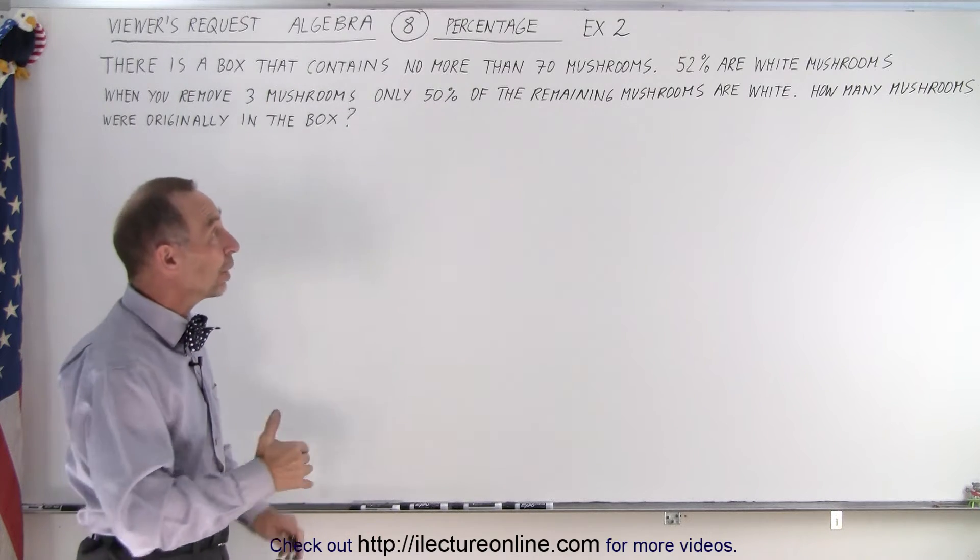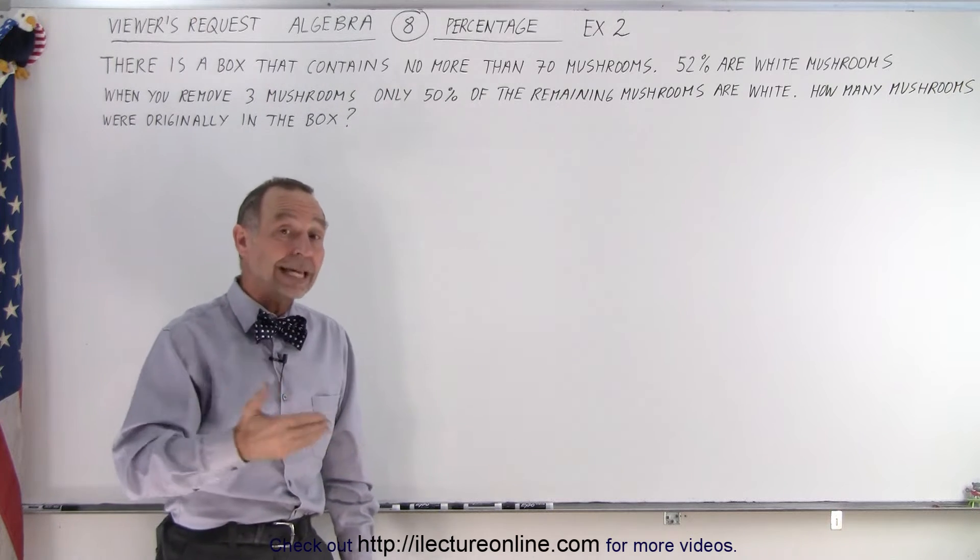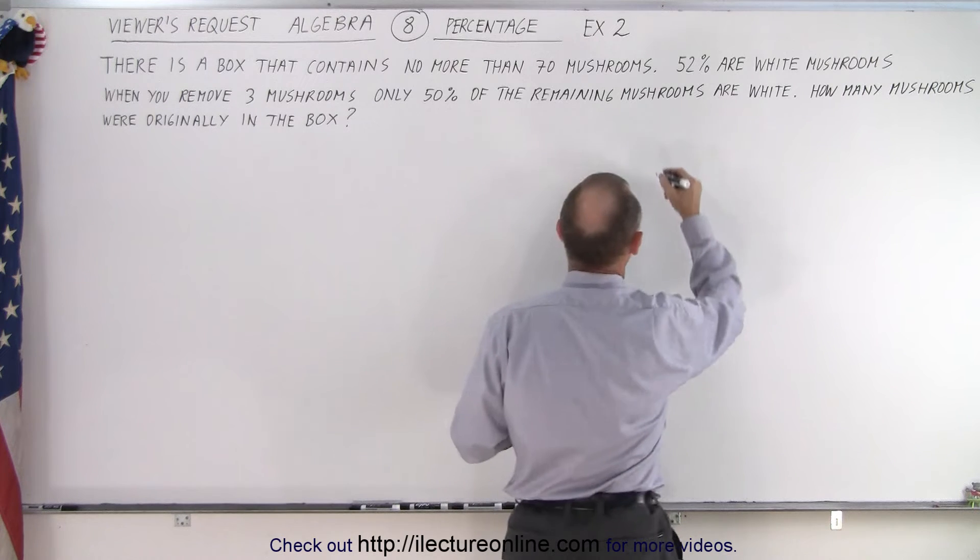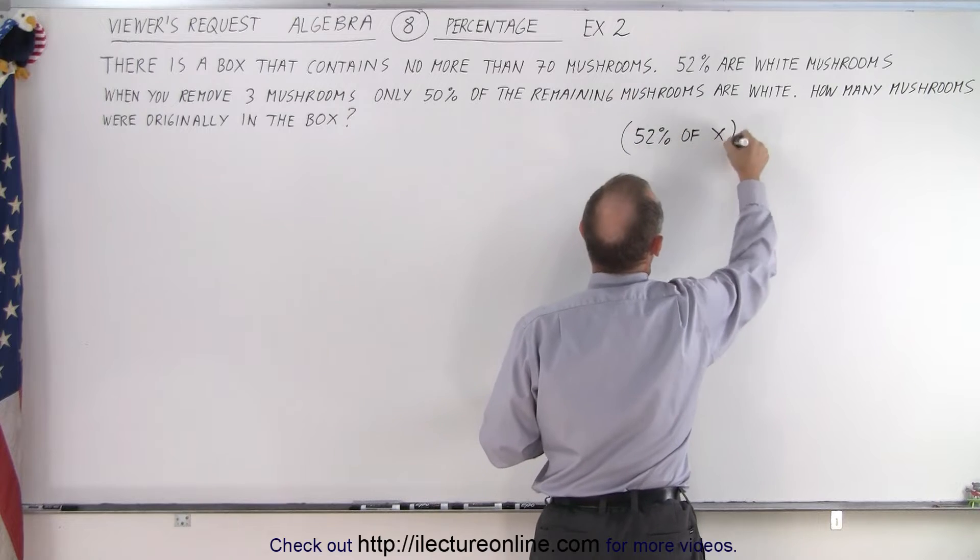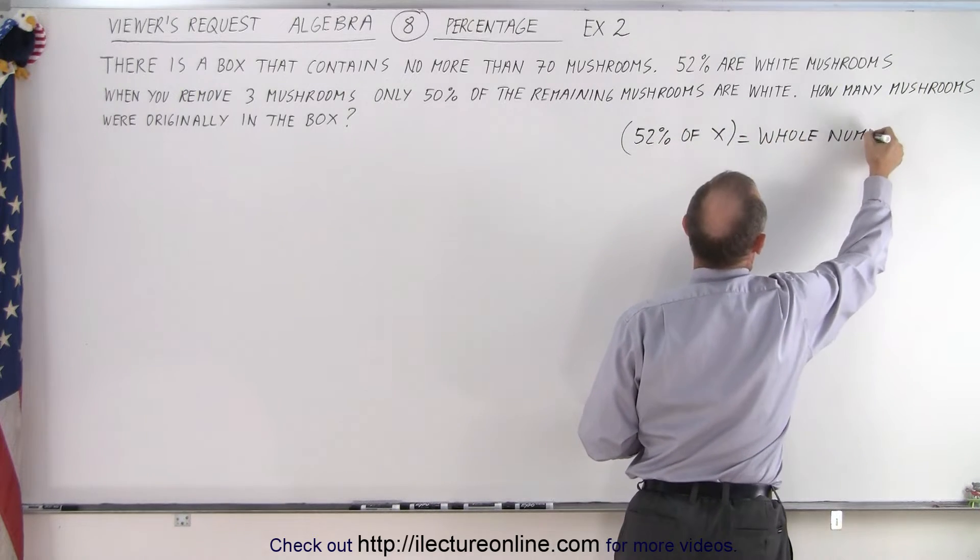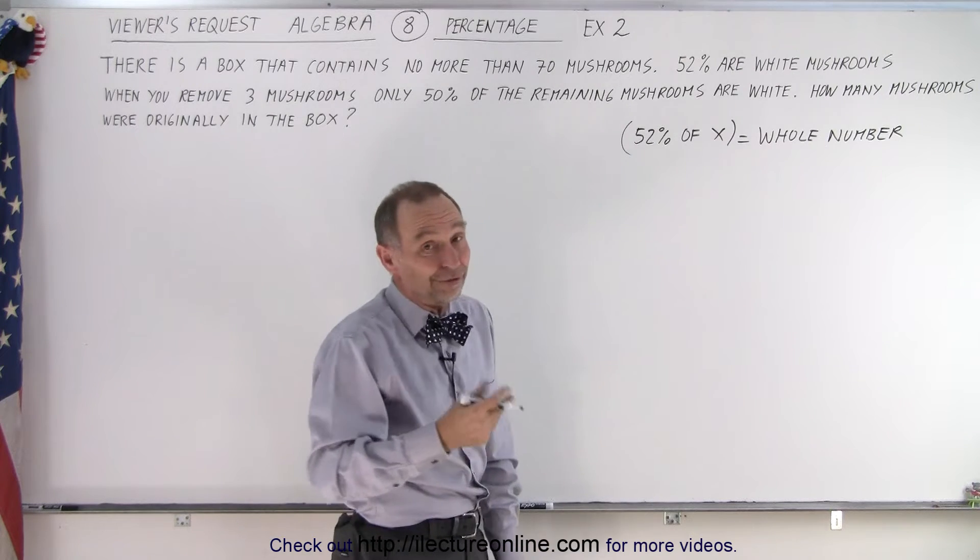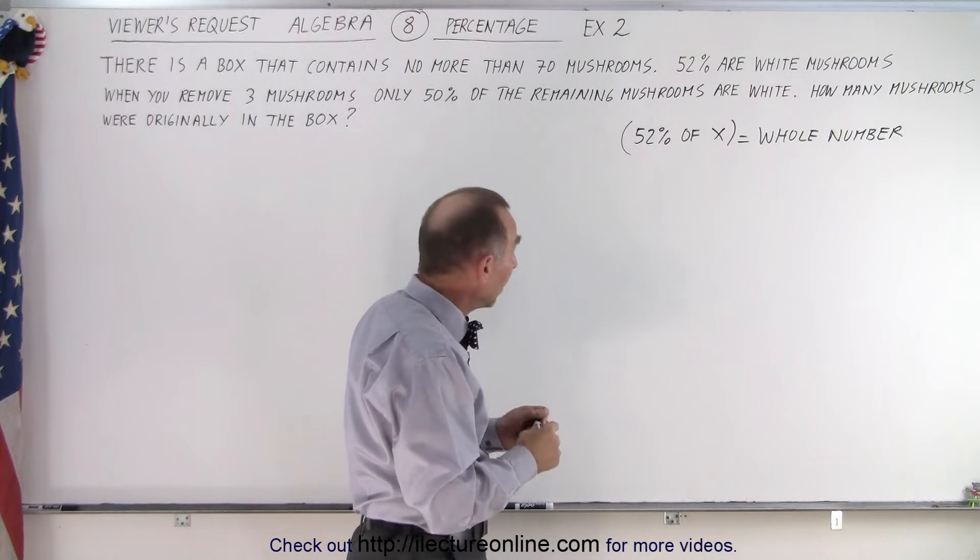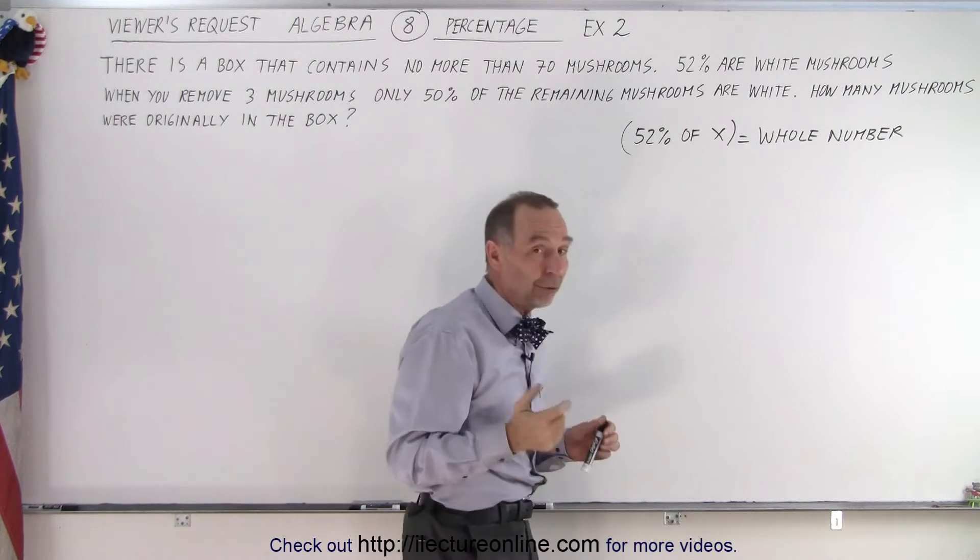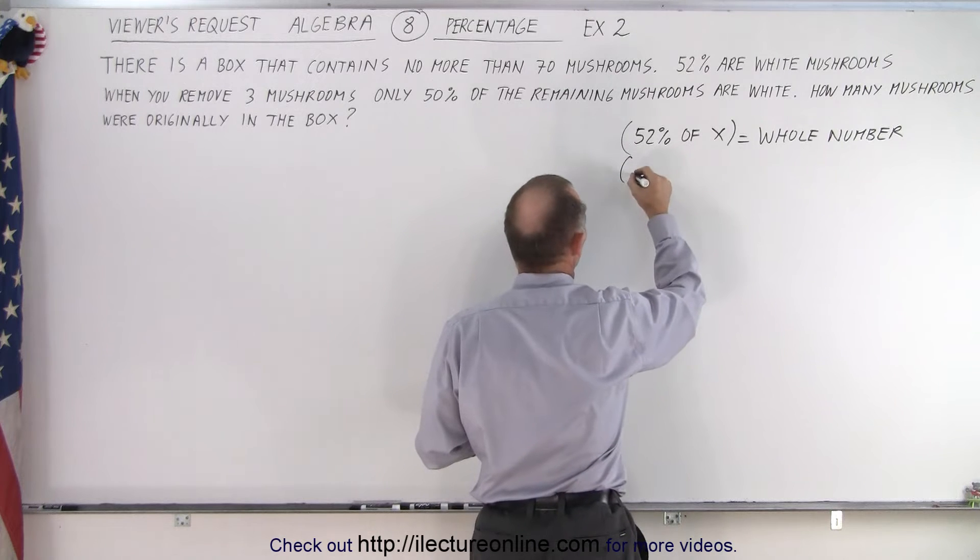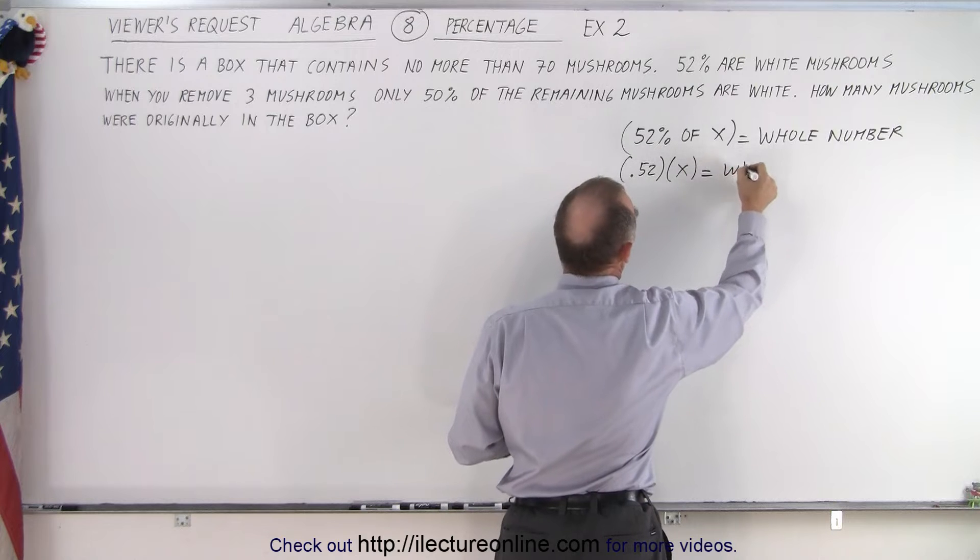But first of all let's see what number is possible so that when you take 52% of that number you get a whole number. So essentially we start by saying 52% of X equals a whole number, and the number must end up in a 5 or in a 0. 5 or 0 will do.